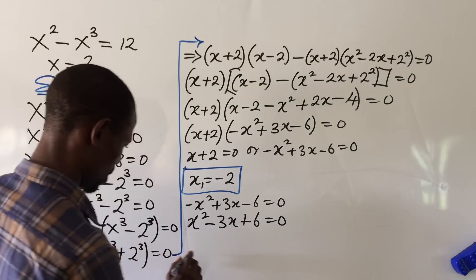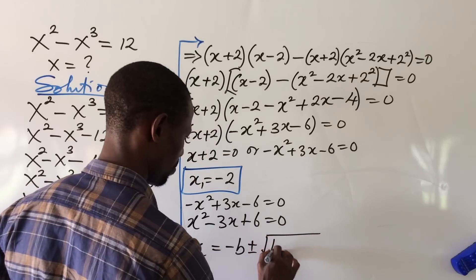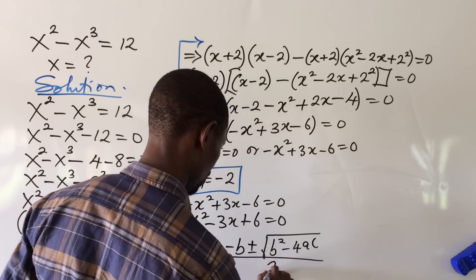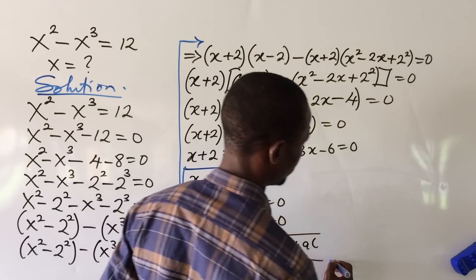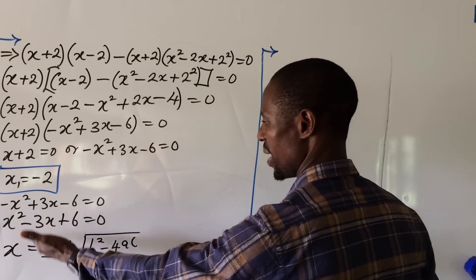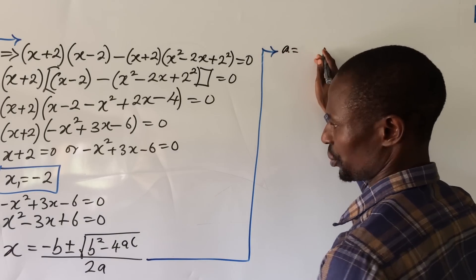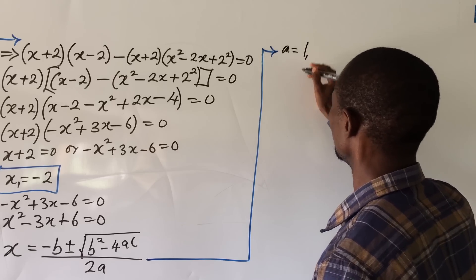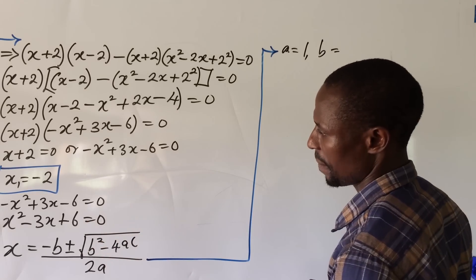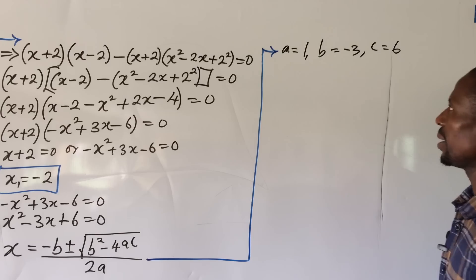The quadratic formula states: x equals minus b plus or minus the square root of b squared minus 4ac, all over 2a. From our equation x squared minus 3x plus 6 equal to zero, we identify: a equals 1, b equals minus 3, and c equals 6.